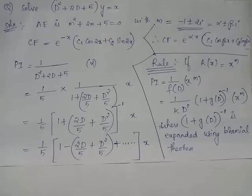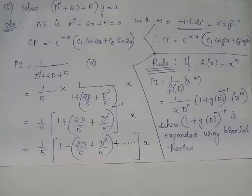Whenever we have imaginary roots, the complementary function will be e raised to alpha x multiplied by c1 cos beta x plus c2 sin beta x, where alpha is the real part of the root and beta is the imaginary part of the root. Here we have alpha equals minus 1 and beta equals 2.